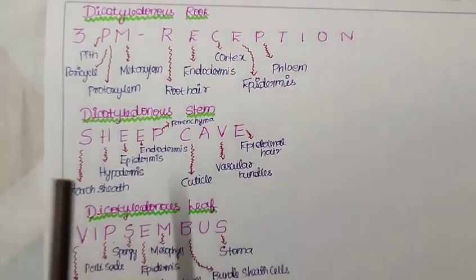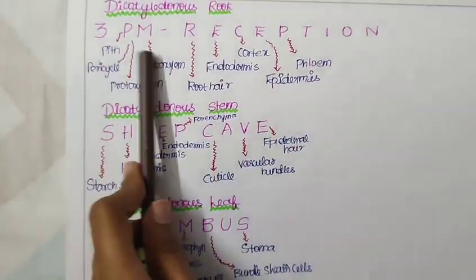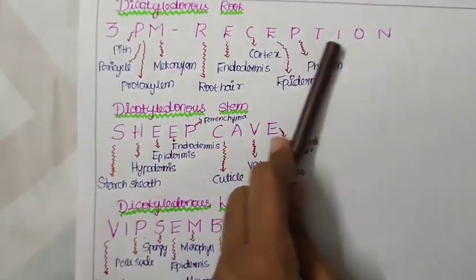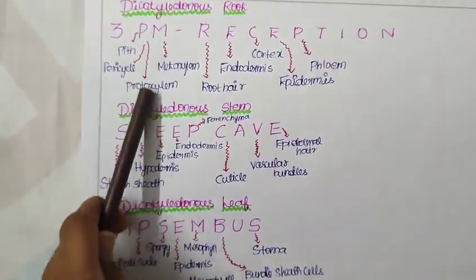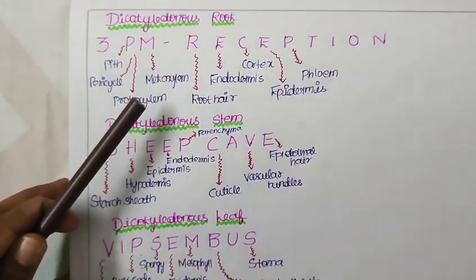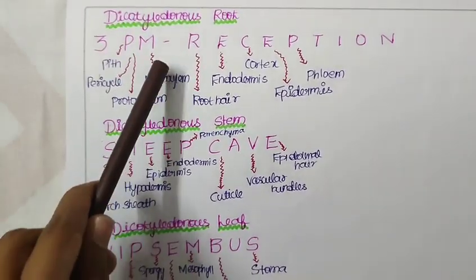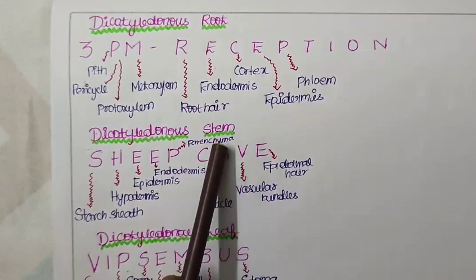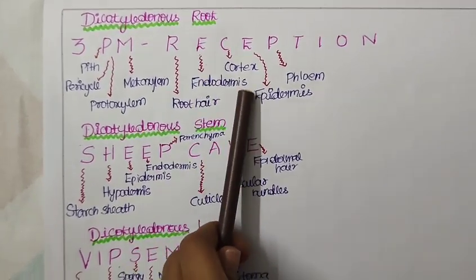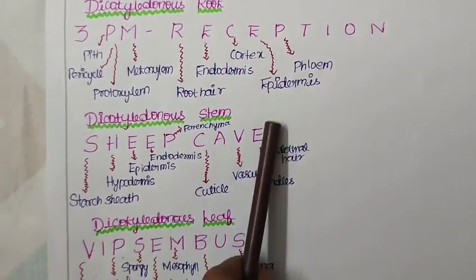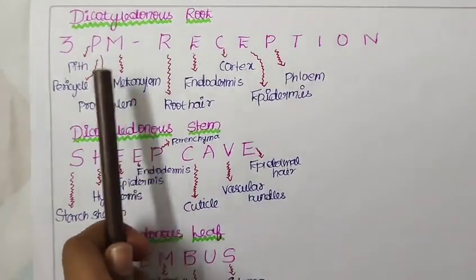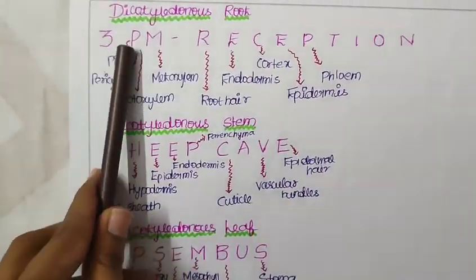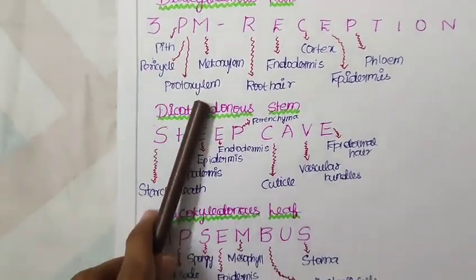Now for the dicotyledonous root, the short trick will be 3 p.m. reception. We are having a reception at 3 p.m. So 3 p stands for there are 3 p's that is Pith, Pericycle and Protoxylem. Now M stands for metaxylem, R for root hair, E for endodermis, C for cortex and E for epidermis and another P for phloem. This is the short trick for dicotyledonous roots which is 3 p.m. reception. Here remember 3 p represents there are 3 p's.